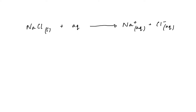In this video we are going to look at the enthalpy and the entropy changes involved when we take an ionic compound such as sodium chloride and dissolve it in water. We can start with the equation: NaCl(s) + aq → ions in solution. This enthalpy change is the enthalpy change of solution, delta_sol H.